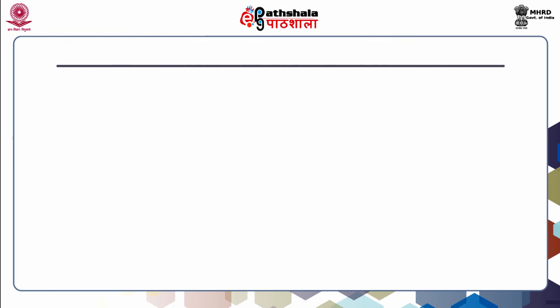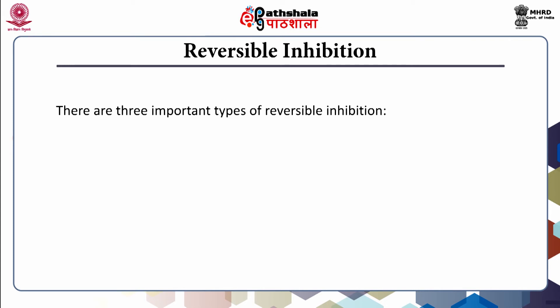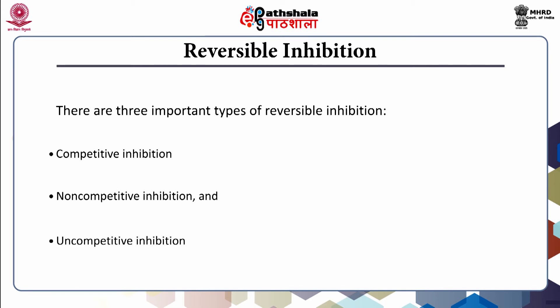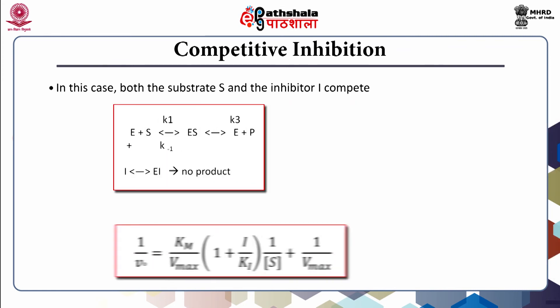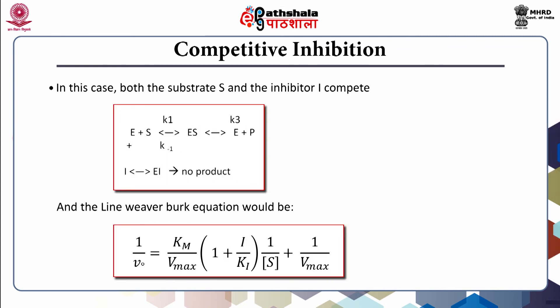Let us see the types of reversible inhibition. There are three important types: competitive inhibition, non-competitive inhibition, and uncompetitive inhibition. In competitive inhibition, both the substrate and inhibitor compete with each other for binding to the enzyme.